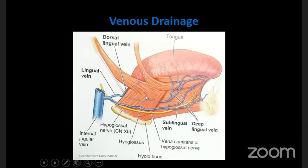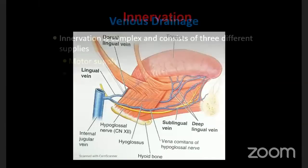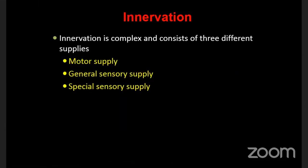Regarding venous drainage, the main vein draining the tongue is the deep lingual vein. Apart from the deep lingual vein, there are other venae comitantes such as the dorsal lingual vein, all joining together to form the lingual vein, which drains into the internal jugular vein.